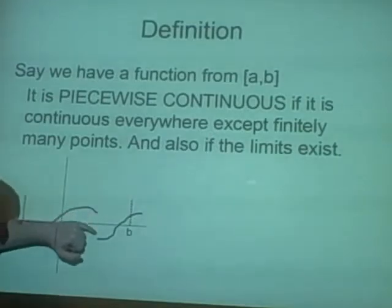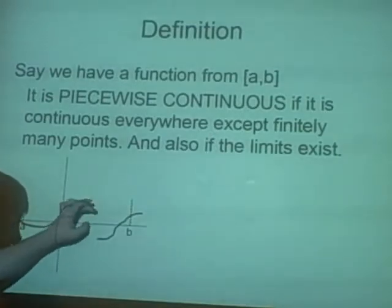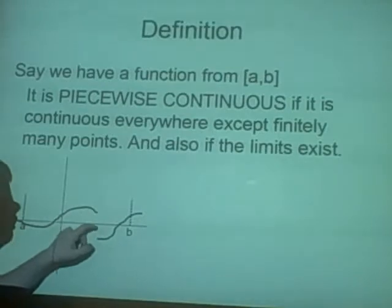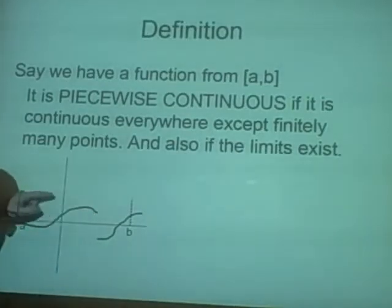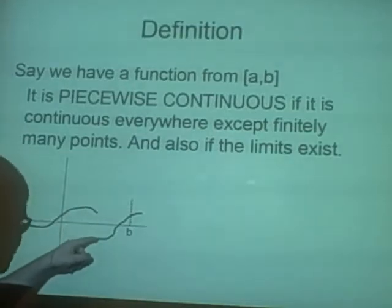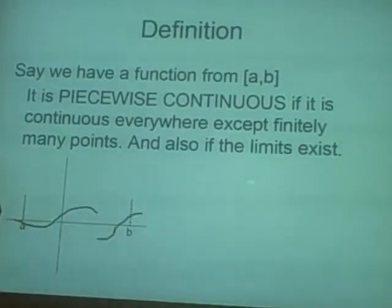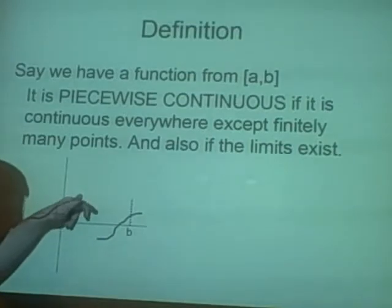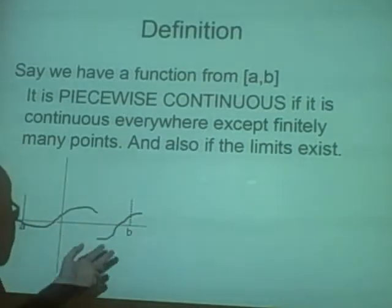See here, this is actually the same point. The way I've drawn it anyway, it should be, because this does actually stop, it starts again down here. So it's continuous everywhere except finitely many points, so here it isn't, but it starts again here, so that's fine.